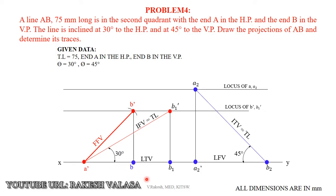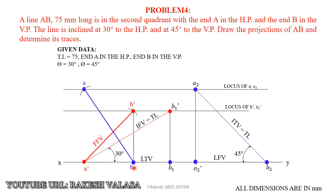Now draw a projector from B dash to the locus of A dash — this point is named B, which is the final front view point projection. Take your engineering compass, measure the length A dash B1, and with B as center draw an arc on the locus of A2. Alternatively, you can directly draw a vertical projector from A dash to get the final top view point A.